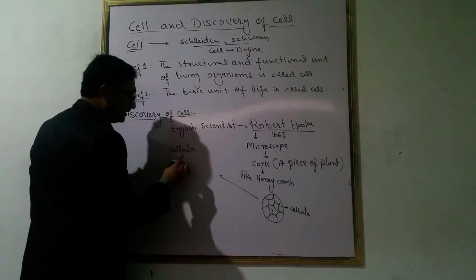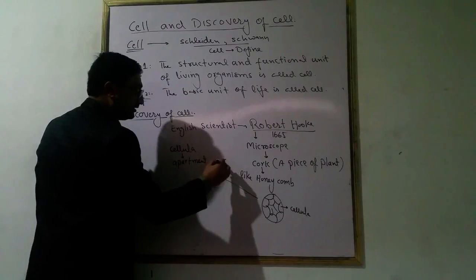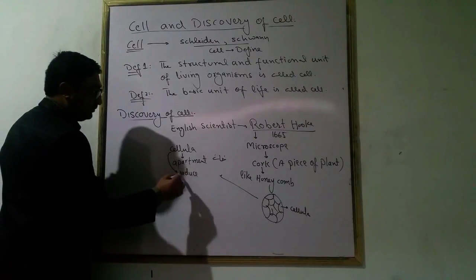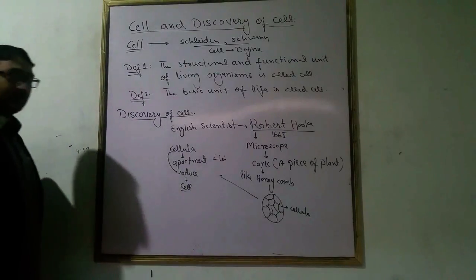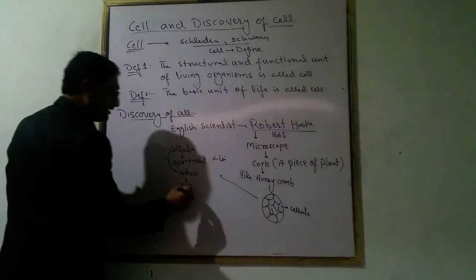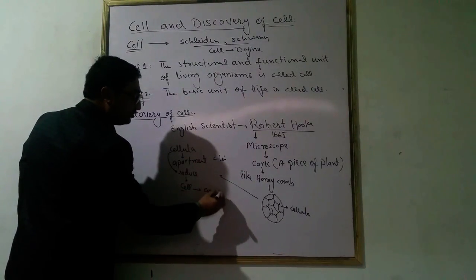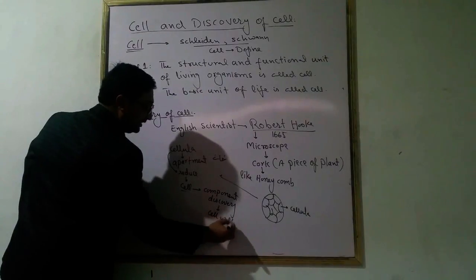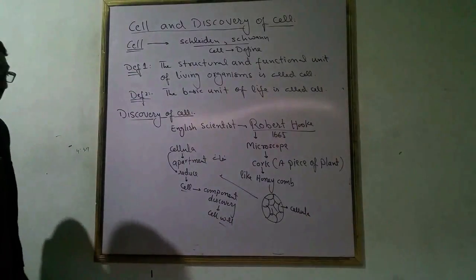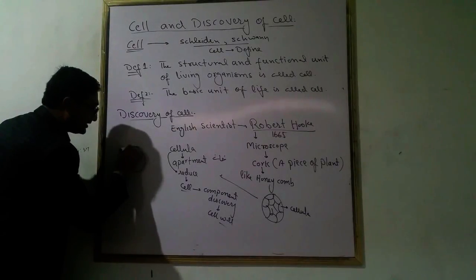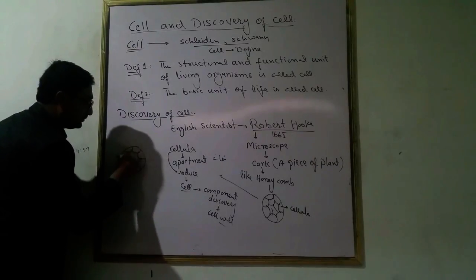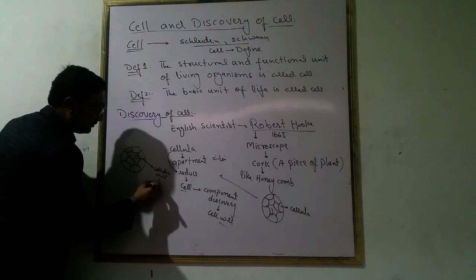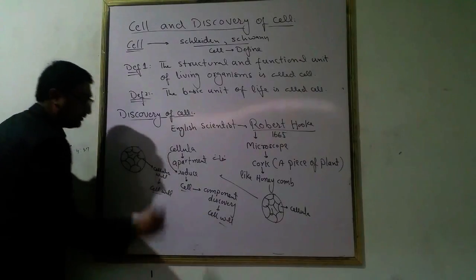The cells looked like apartments — like a honeycomb pattern. Robert Hooke discovered the cell wall. The structure he identified showed that cells have a special structure, and he observed the cell wall.